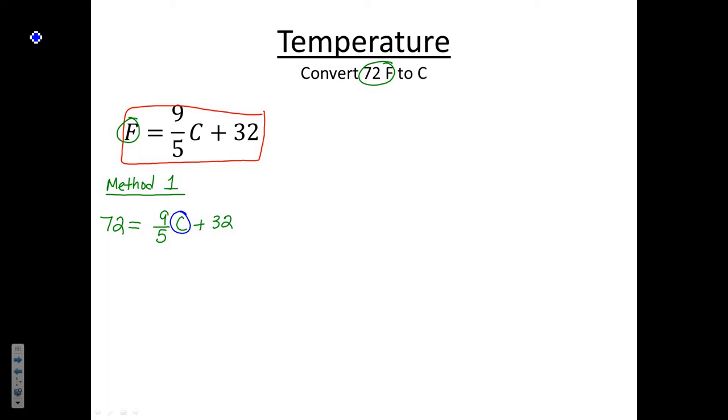We need to get rid of the 9/5 and the plus 32, and I'm going to always start with addition or subtraction first. So to get rid of the positive 32, we're simply going to subtract 32 from both sides. So 72 minus 32 is going to give me 40. Hang on to your equal sign. And then on the right-hand side, we have 9/5 C and 32 and negative 32 of course cancel out.